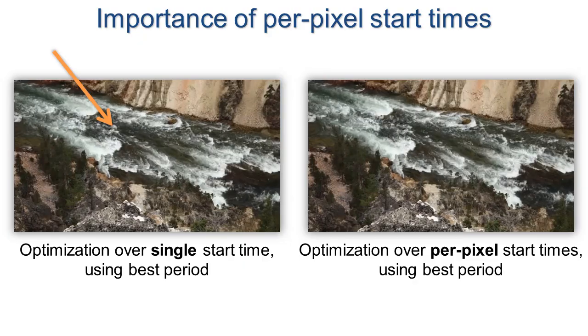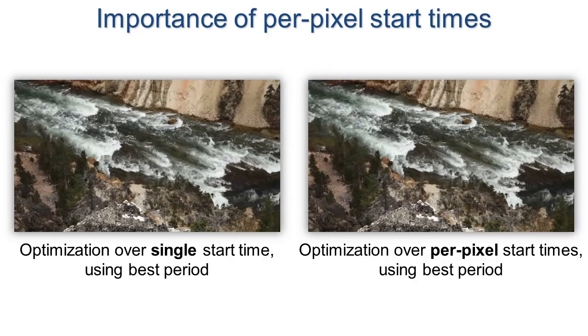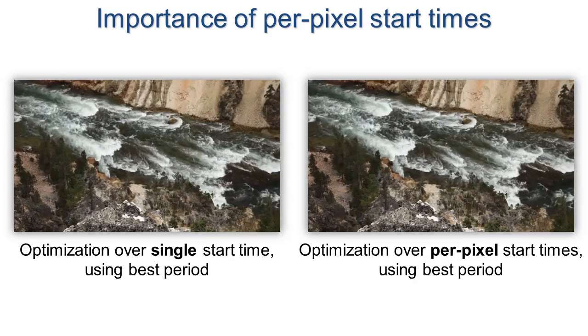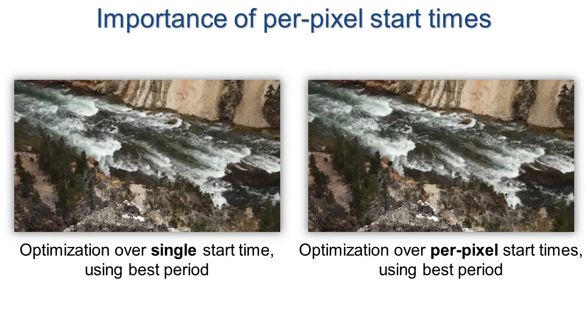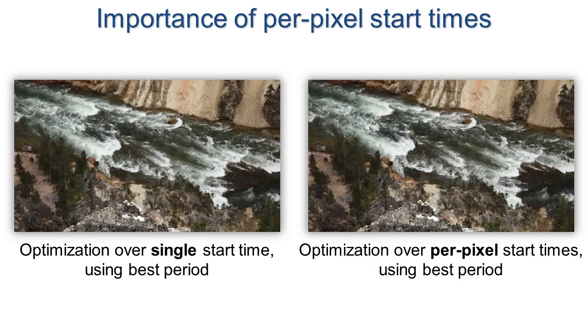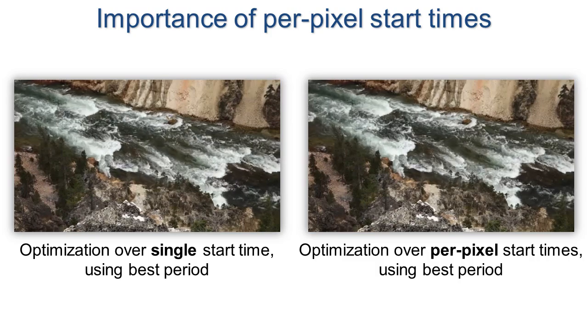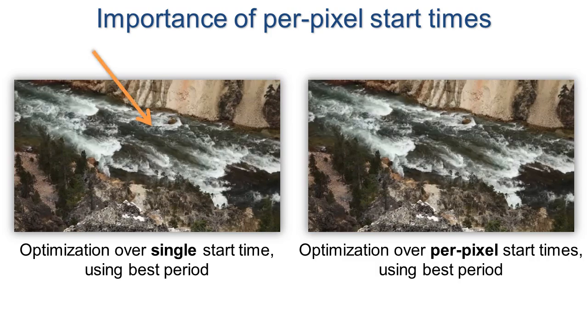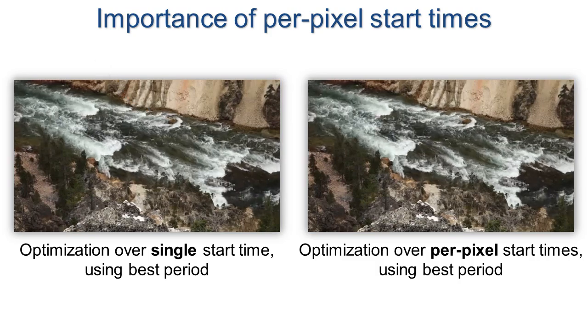This comparison highlights the benefit of allowing different per-pixel start times. With a single start time across all pixels, temporal blurring is much more evident.